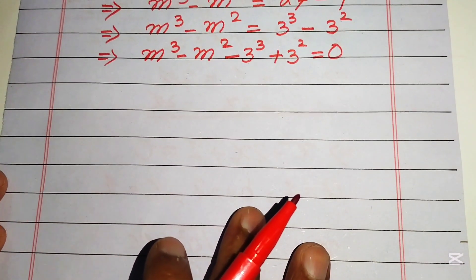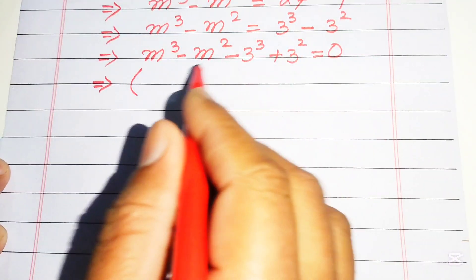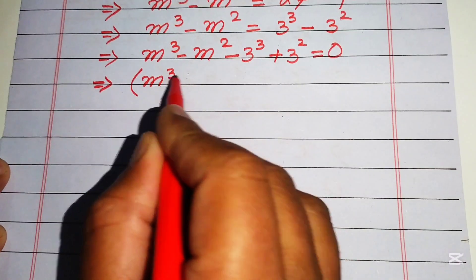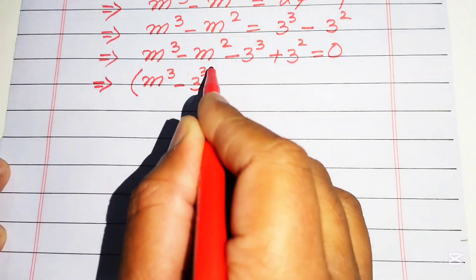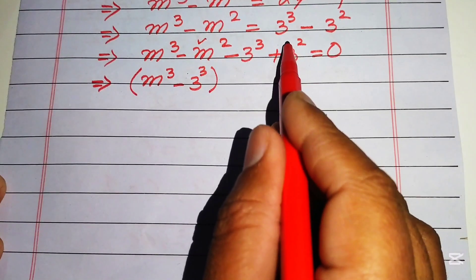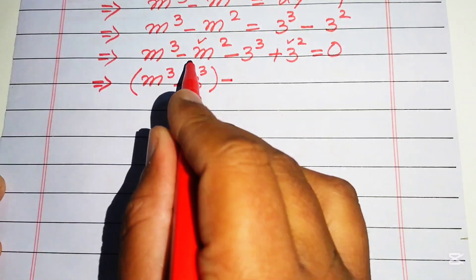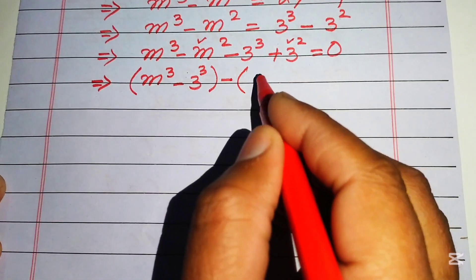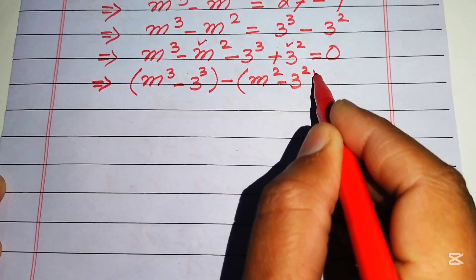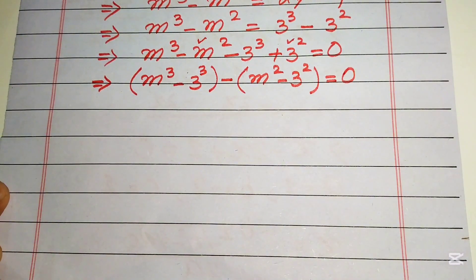Now we make pairs: cubic term with cubic term and square term with square term. The cubic terms are m cubed minus 3 cubed, and the square terms are m squared and 3 squared. We take a common negative sign from the two square terms, leaving m squared minus 3 squared, and this equals 0.